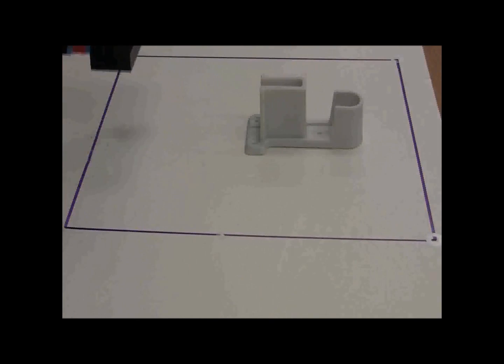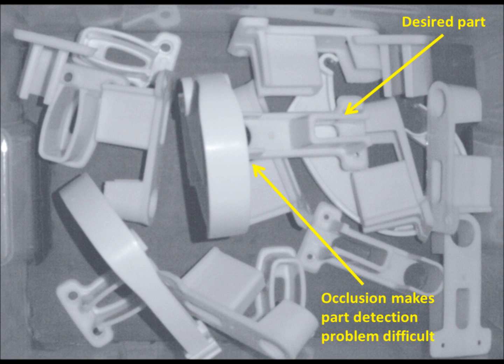Currently, the imaging technology is nowhere close to human abilities. Sometimes the bin is complex and the system simply fails to find the part in the bin. RoboSAM is smart enough to call a remotely located human operator for help.